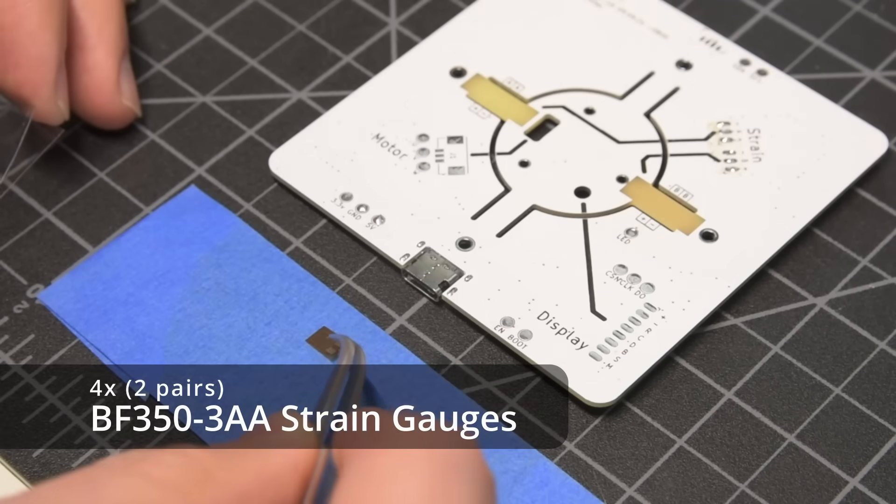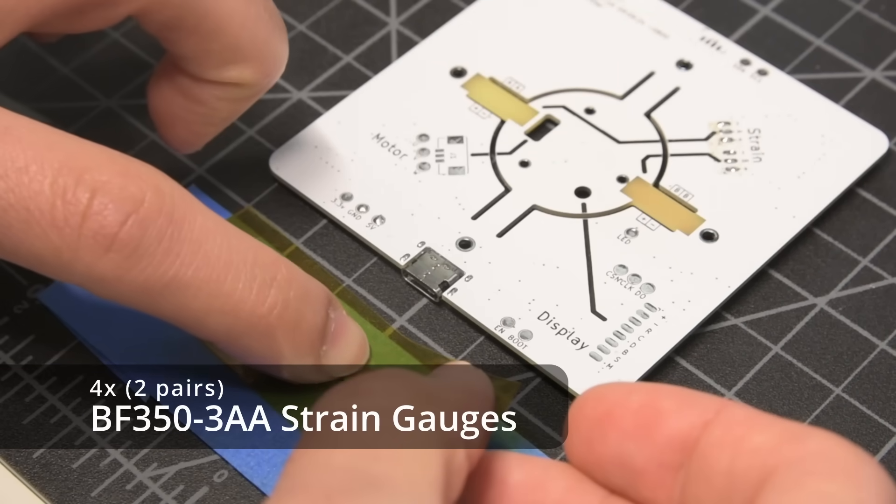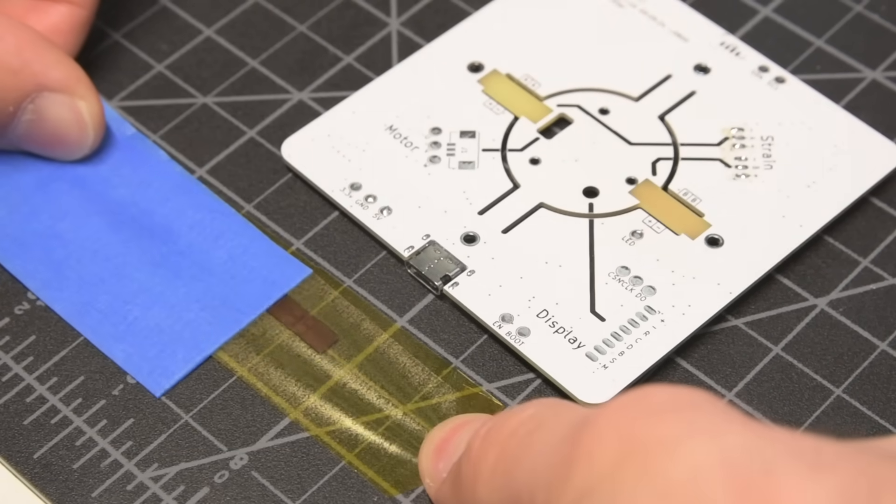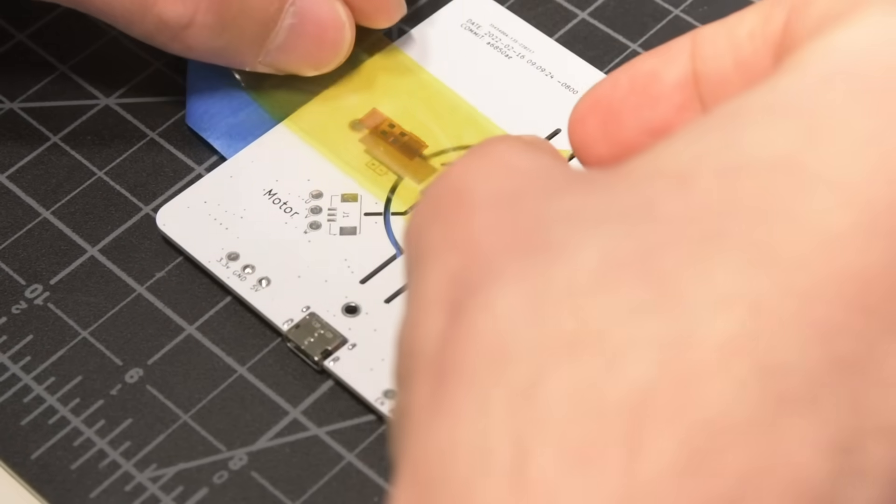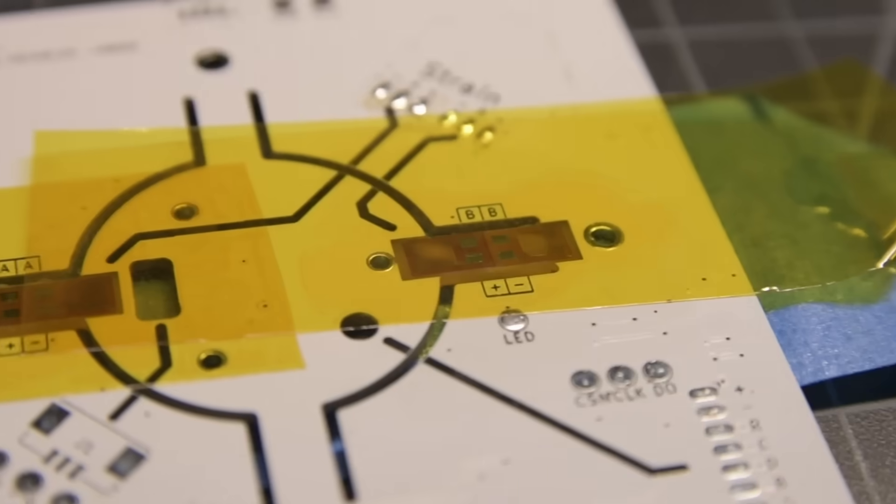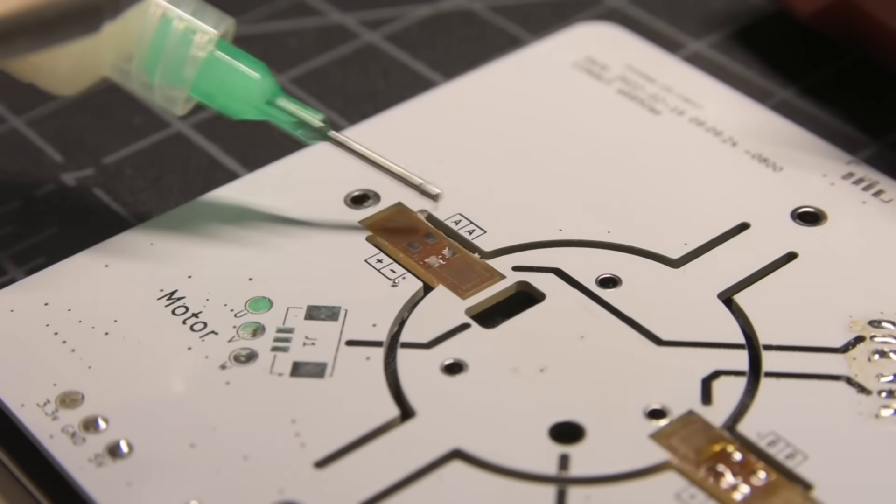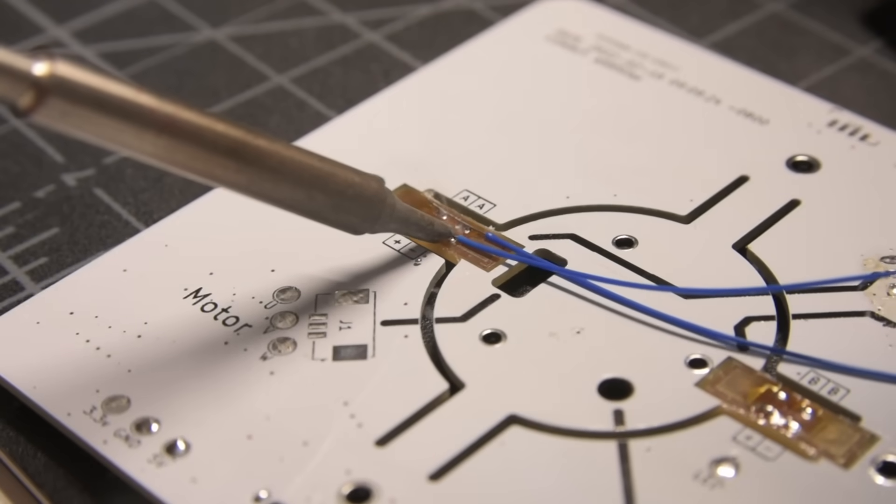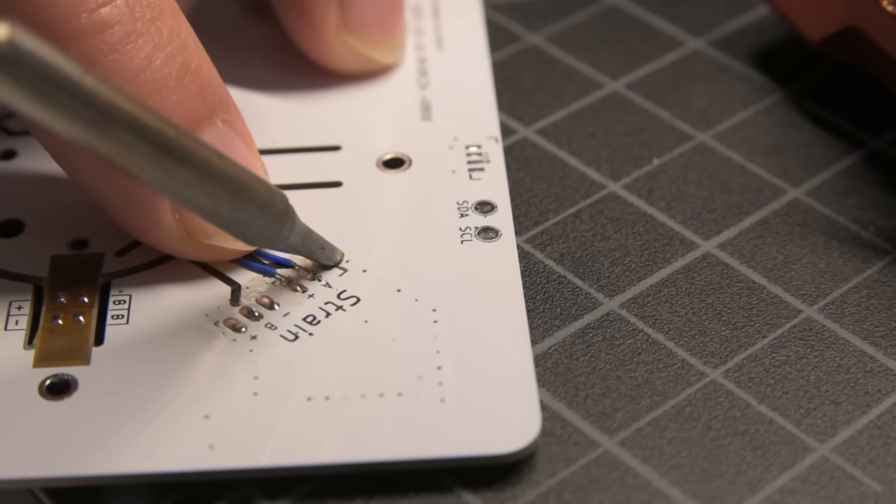To measure the PCB's flexure, I mounted four strain gauge sensors to two of the spokes on the back of the PCB. After putting two drops of CA glue on the bare surface of the PCB, I used polyamide or Kapton tape to hold the strain gauges in place while the glue cures.